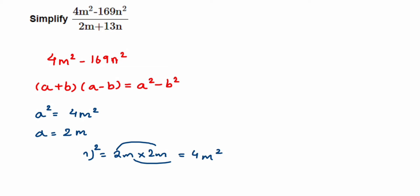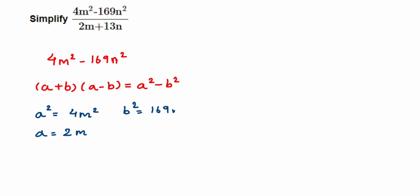Similarly, b² = 169n², and 169 is the square of 13, so b = 13n. If you have a doubt, you can square 13n — that's (13n)² = 169n² — to cross-check. Now we have a = 2m and b = 13n, so we can find (a + b) and (a − b).